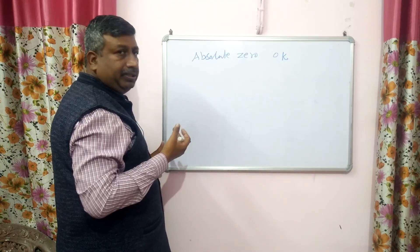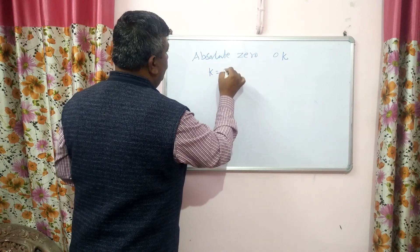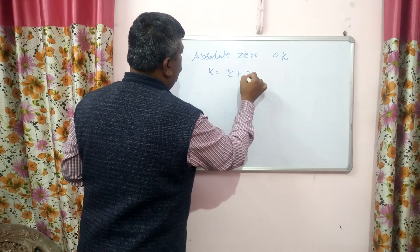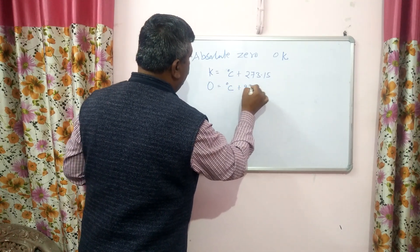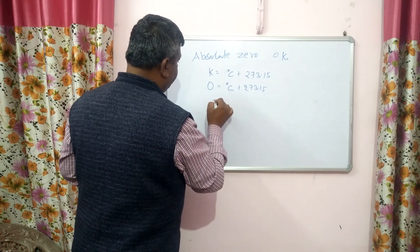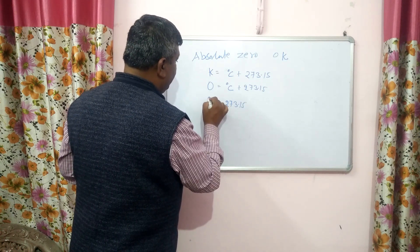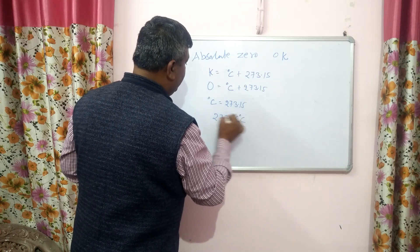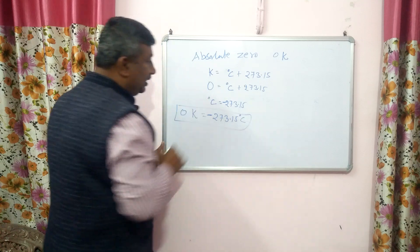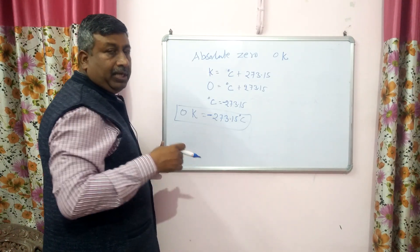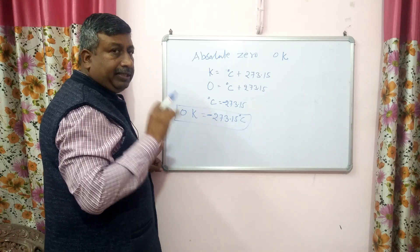A common exam question is: at absolute zero temperature, what is the temperature in degree centigrade? Since K = C + 273.15 and K = 0: 0 = C + 273.15, so C = −273.15 degree centigrade. Therefore 0 Kelvin equals −273.15 degree centigrade. This is considered the minimum possible temperature, below which no molecular activity exists.